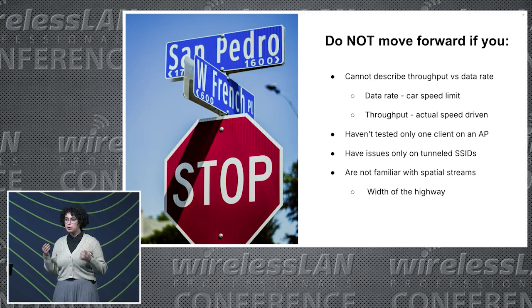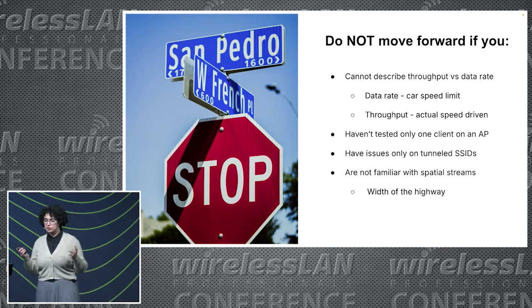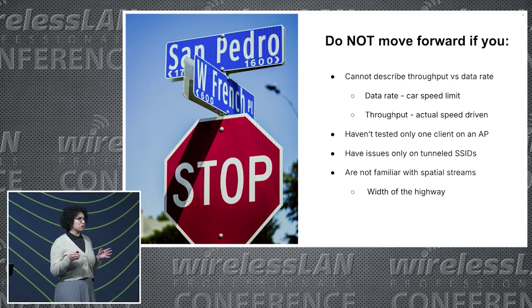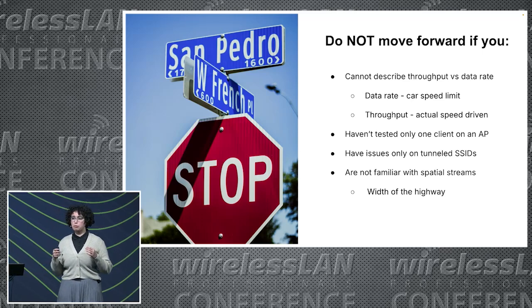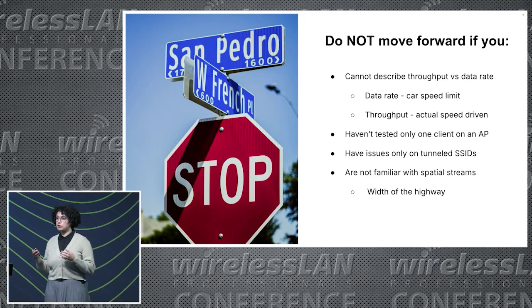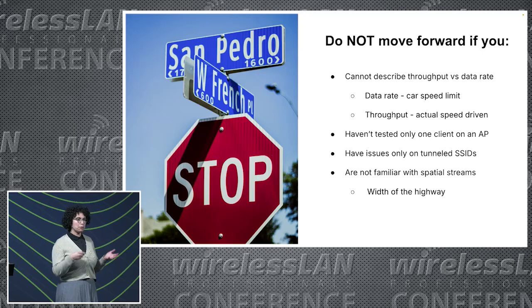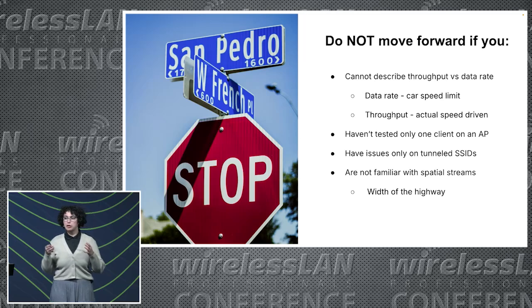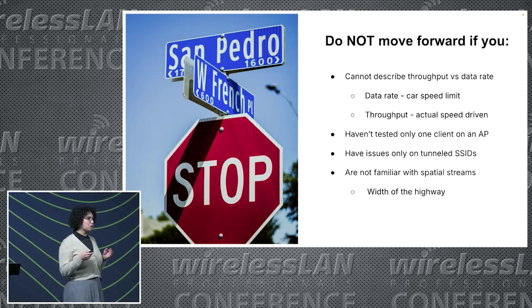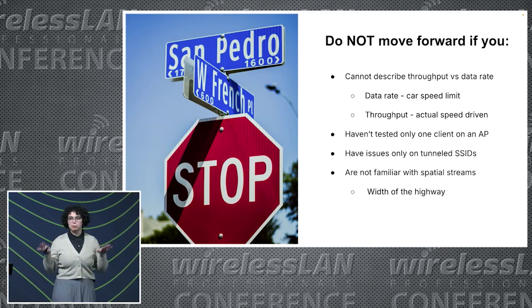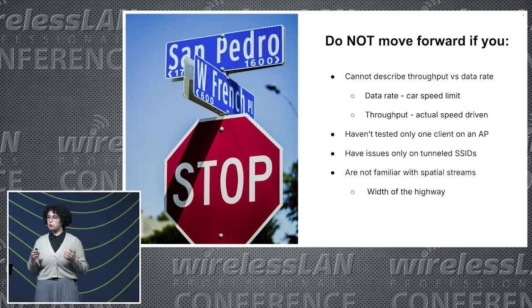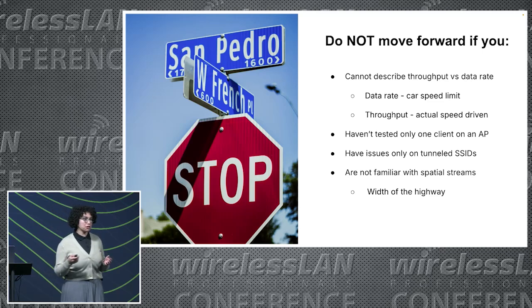For example, you're driving down this 55 mile per hour road and you're actually driving 25 miles per hour because there's traffic. Additionally, I'd advise ruling out whether your throughput issue happens when you only have one client connected to the AP or when you have 15 clients connected, because the nature of those two issues are different. If you have one client and see poor throughput, that's probably related to the RF environment. Also, if you specifically have an issue with a tunneled SSID, stop right there — tunneled SSIDs have a natural limitation on throughput because of tunneling and encryption.